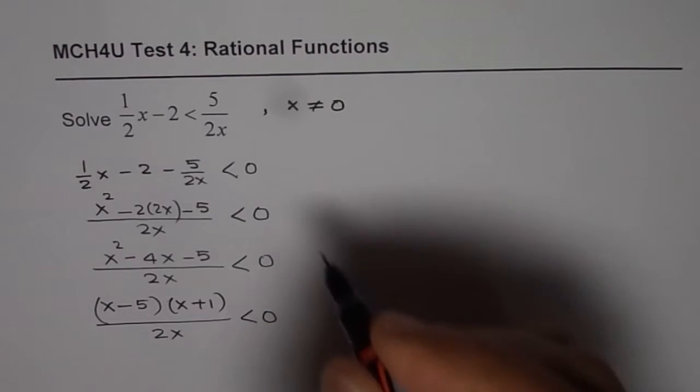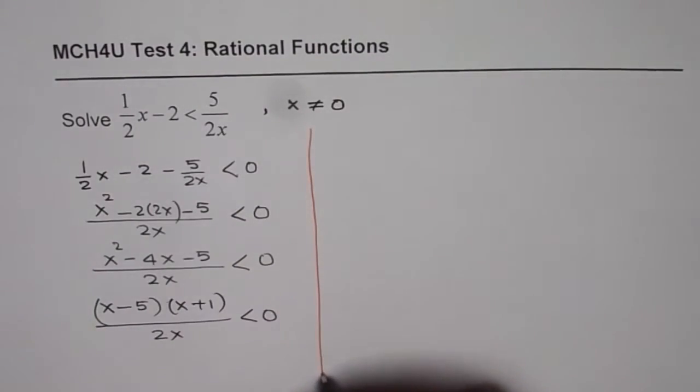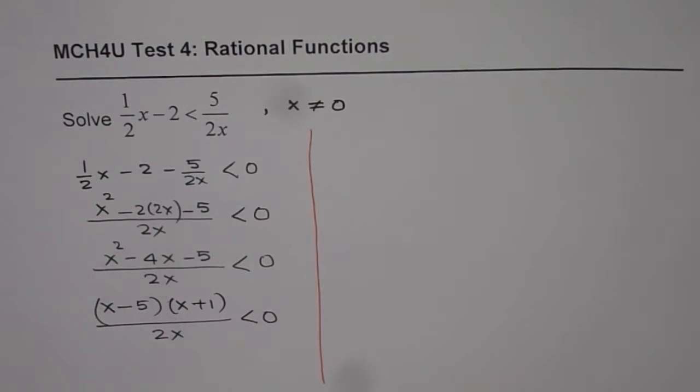So, now we have an inequality in factored form which we can solve using intervals. We have zeros in the numerator. So, let's list them out. Let me first write down the inequality as such and then we will solve.